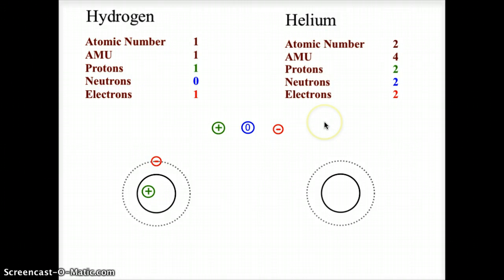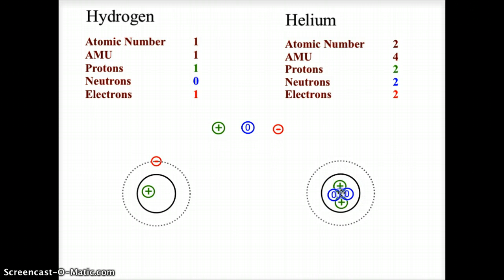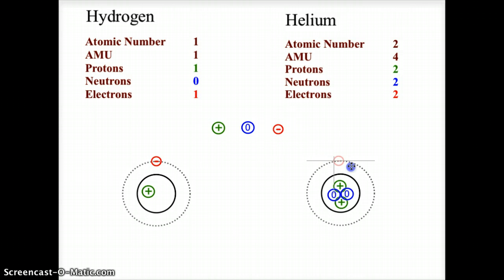Let's build a helium atom. Atomic number 2 tells us it has two protons. The mass is 4, so 4 minus 2 gives two neutrons, which we add to the nucleus — remember, the nucleus is very densely packed. Making it a neutral atom, we place two electrons in that first orbit. There we have a model of helium.